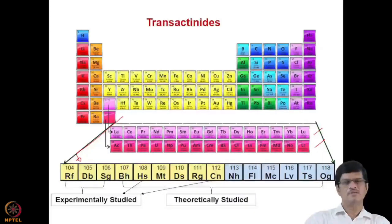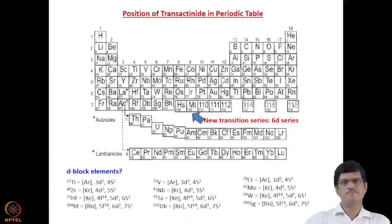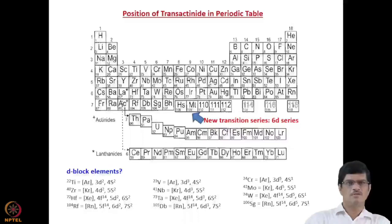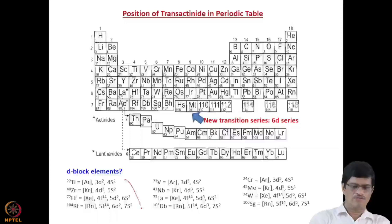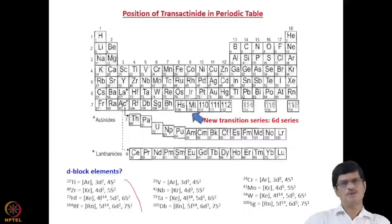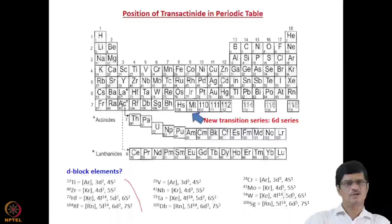The chemistry of transactinides follows that of transition elements, confirming they are d-block elements. From the electronic configuration, titanium (Z=22), zirconium (Z=40), hafnium (Z=72), and Rutherfordium (Z=104) have similar electronic configurations with d² s² type configuration. In the case of hafnium and Rutherfordium, filled f-levels — 4f¹⁴ and 5f¹⁴ respectively — are also present.